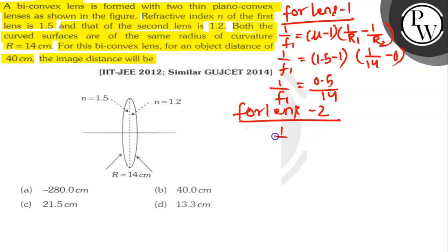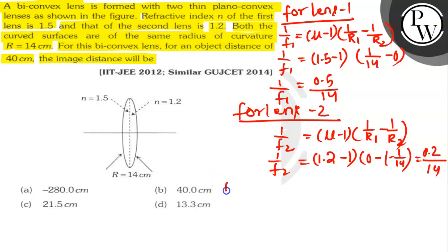For lens 2, 1 by f2 equals 1.2 minus 1 into 0 minus minus 1 by 14. So it will be 0.2 by 14. Now applying lens formula.